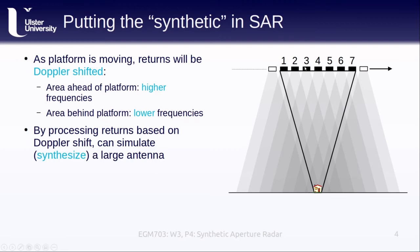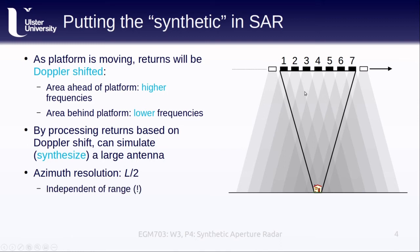It turns out that if we do this, the azimuth resolution of our sensor ends up being half of the length of the physical antenna. It doesn't actually matter how far away the target is — our ability to distinguish between targets in the azimuth direction is only limited by the physical size of the antenna. Just like we saw with range resolution, by processing the signals in a clever way, we end up improving the resolution of our system without having to change much about the physical details.